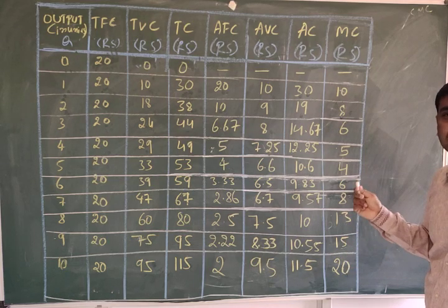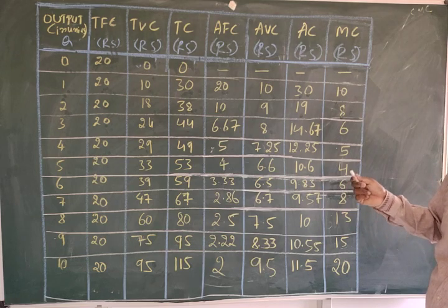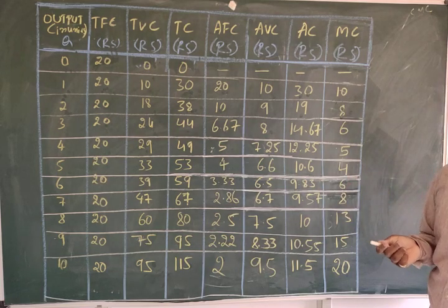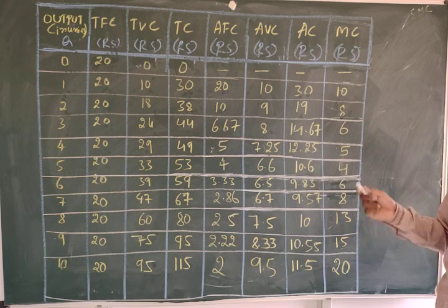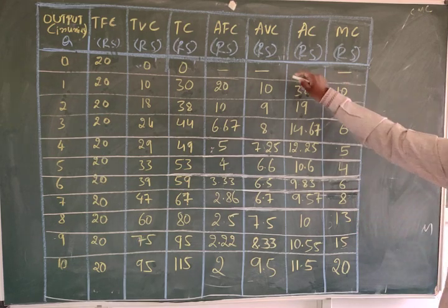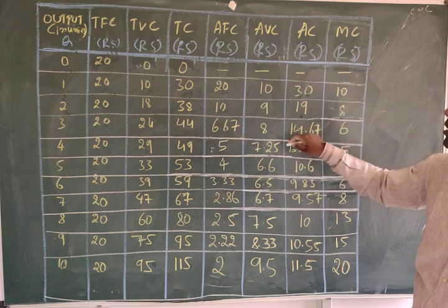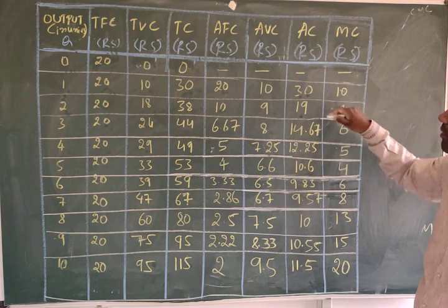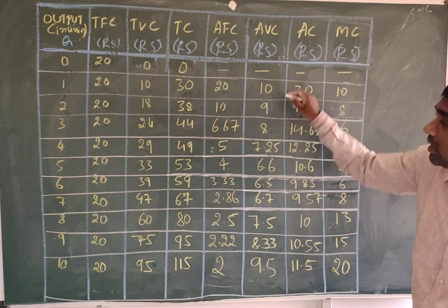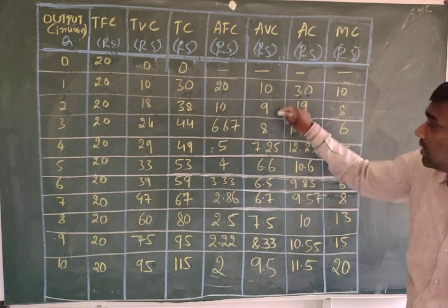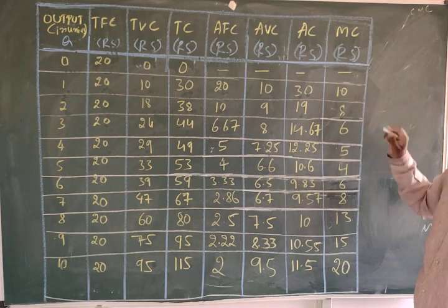The MC curve always cuts the average curve at the point of minimum, from below. When AVC decreases, marginal cost also decreases. When AVC decreases less than that, marginal cost also decreases less than AVC.